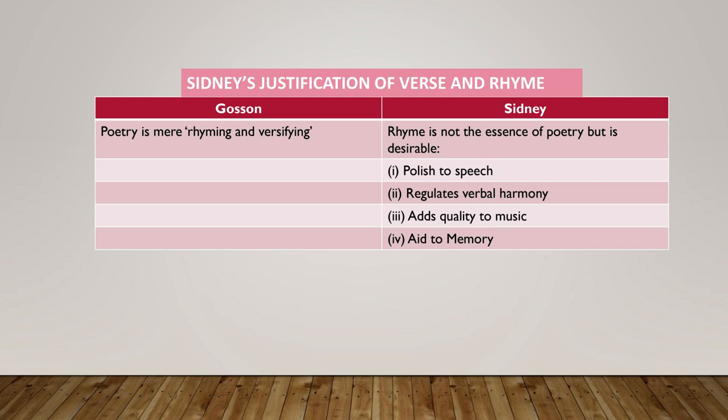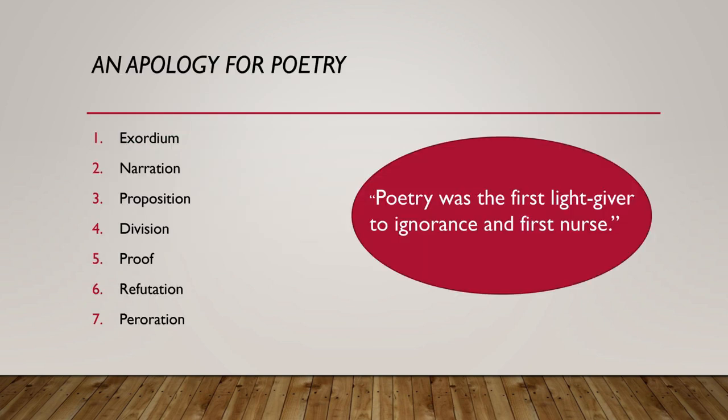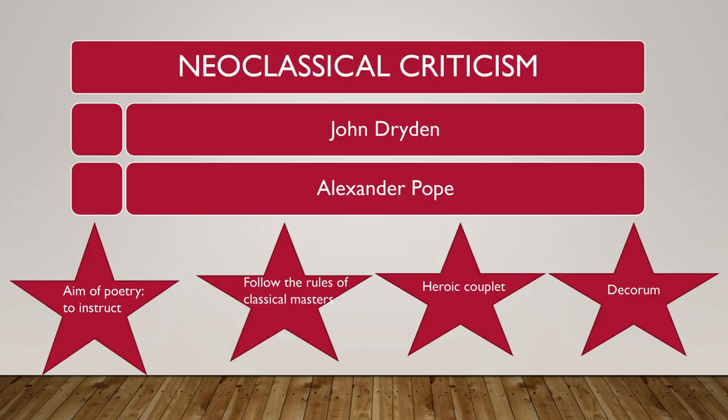Moving to neoclassical criticism, we have two great critics: Dryden and Pope. Neoclassical critics adhered to the classical writers and their rules. For them, the very aim of poetry is to teach and to instruct. They followed all the rules of the classical masters, gave too much importance to heroic couplet, and also to poetic decorum.